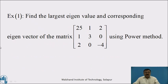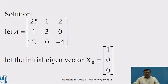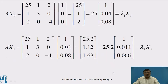Now, the next example: find the largest eigenvalue and the corresponding eigenvector of the matrix A = [25, 1, 2; 1, 3, 0; 2, 0, -4] using the power method. Solution: Let A be equal to this square matrix, and consider the initial eigenvector X0 as the column matrix [1; 0; 0].